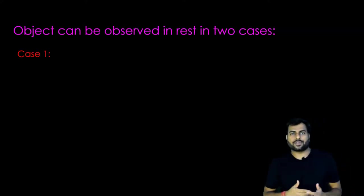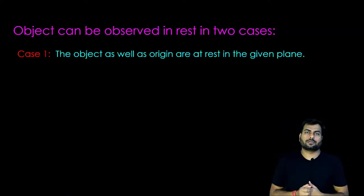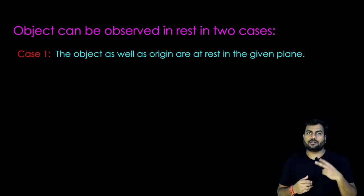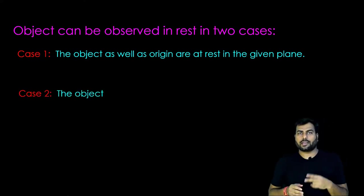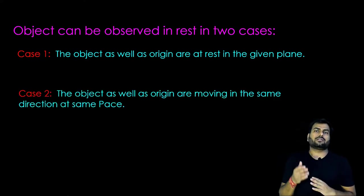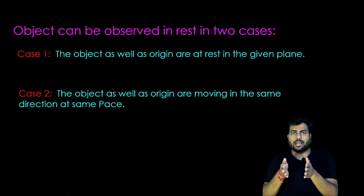Now we will see when the object can be said at rest. Object can be said at rest in two cases. Case 1: The object as well as the origin are at rest in the given plane. Case 2: The object as well as the origin are moving in the same direction at same speed.